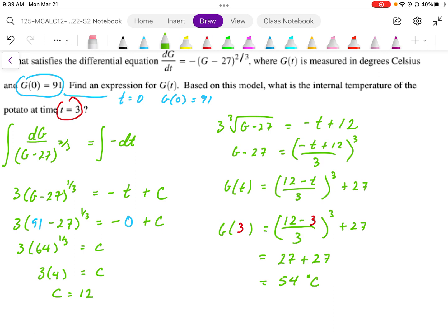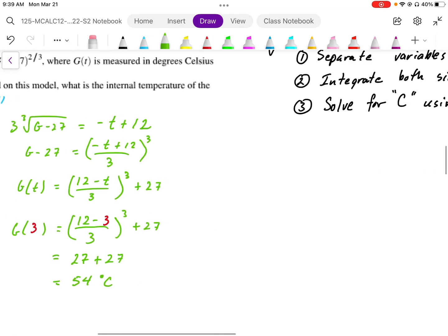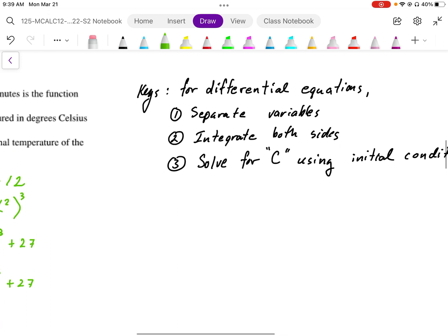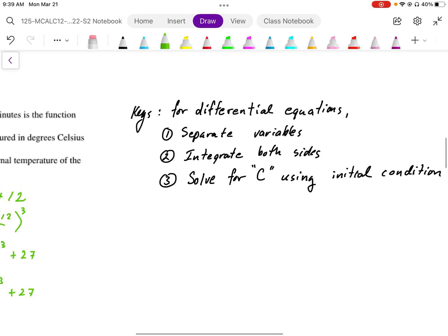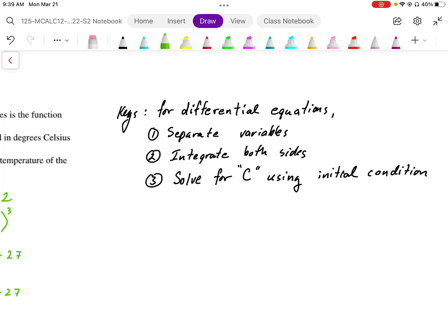That's our G of 3. For differential equations, we want to separate and integrate both sides, and then solve for C using the initial conditions. That's a key for solving differential equations.